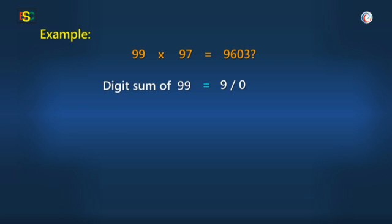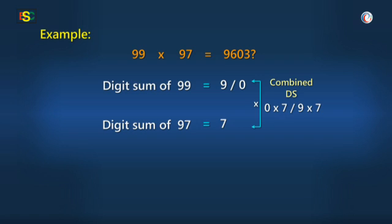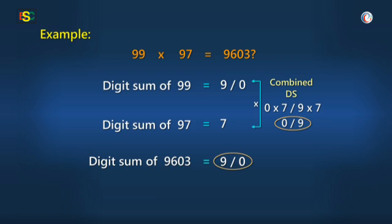Then, digit sum of 97 is 7 only. And now, combining 0 into 7, or 9 into 7, is 0, or 9 again. And then, the given product, that is 9603, digit sum is again 9 or 0. So here also, digit sum is matching.